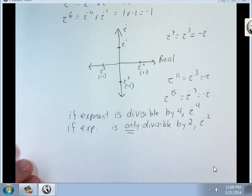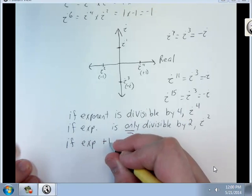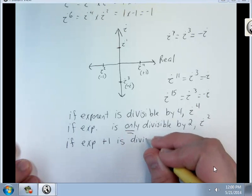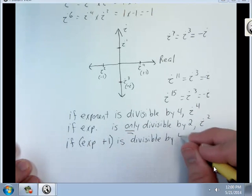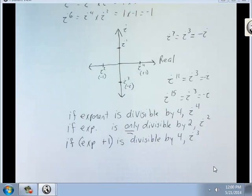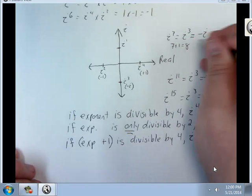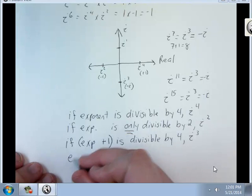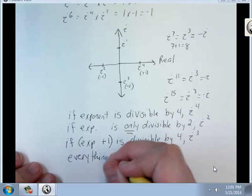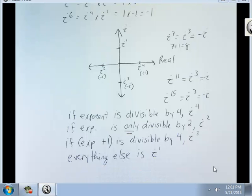If exponent plus 1 is divisible by 4, it's i to the third. Up here, 7 plus 1 is 8. That means it's divisible by 4, which means I have i to the third. Everything else is i to the first. And there are your rules for powers.